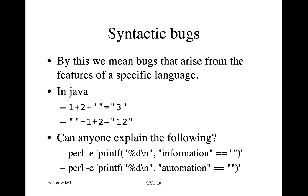The next type of bug after arithmetic bugs are syntactic bugs — bugs that arise from the features of a specific language. Strongly typed languages can exclude all sorts of errors and make other types of error easier to fix, but they have side effects. In Java, for example, if you evaluate one plus two plus quote space quote, you're going to get quote three quote, because you start off with an integer which then gets forced into a string. On the other hand, if you start with quote space quote plus one plus two, since you've forced that into being a string, what happens is not addition but concatenation, and so you end up with quote one two.